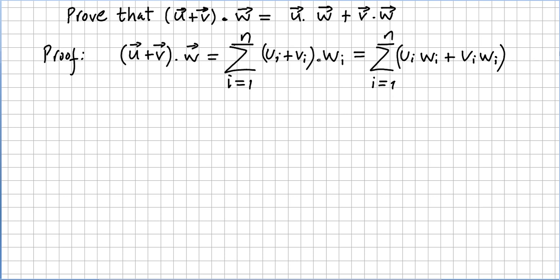But here it's only dot product so we only follow the definition, we just keep the distribution here. Maybe it is better to write it this way. So ui times wi plus vi times wi.